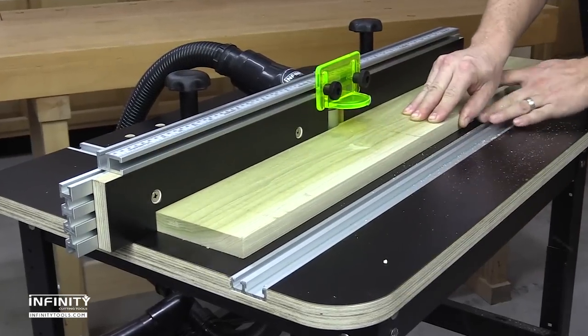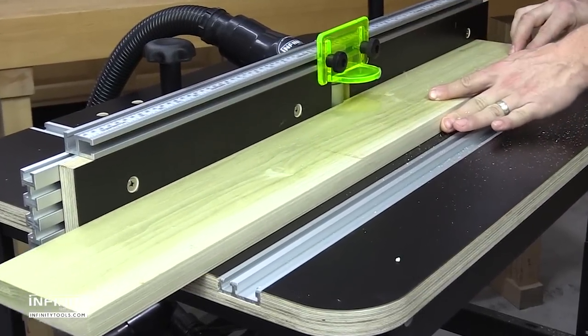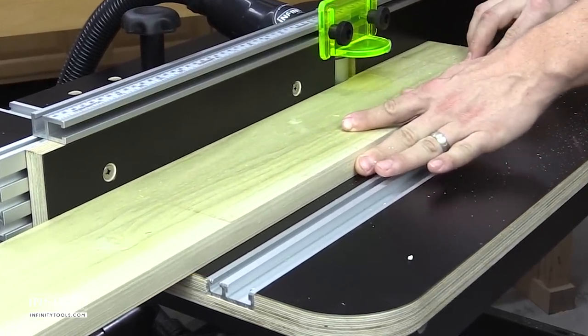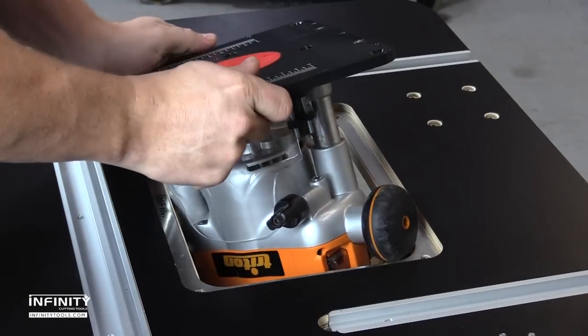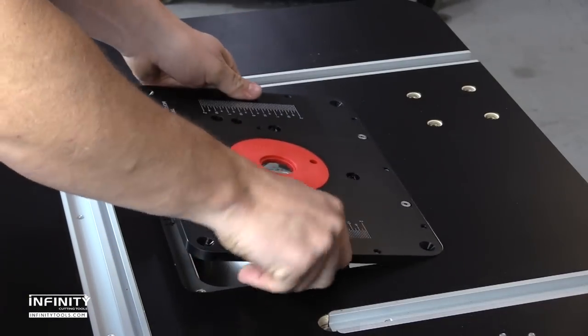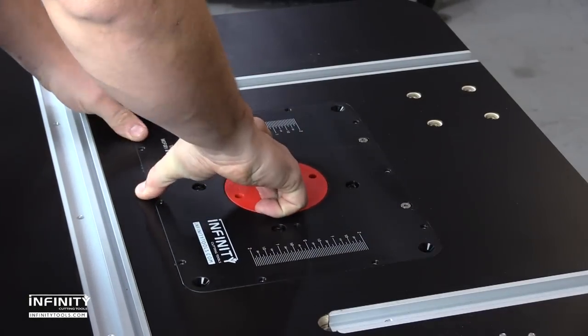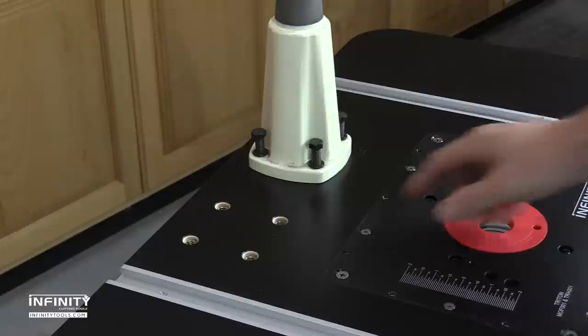The MicroDot Top Surface reduces friction so even the largest and heaviest workpieces glide easily through the cut. Each top is CNC machined to accept a standard 9.25x11.75 inch router lift or plate.